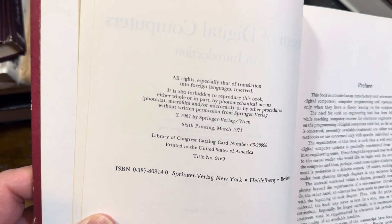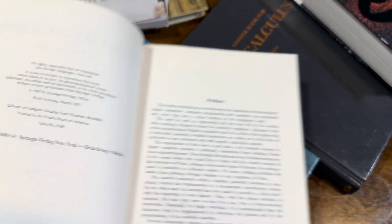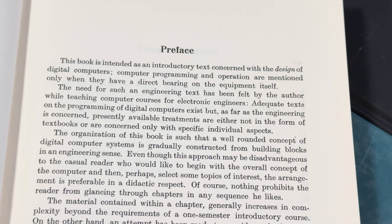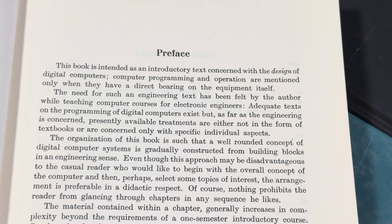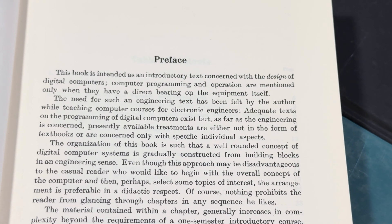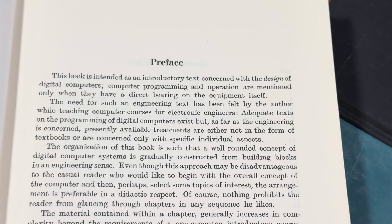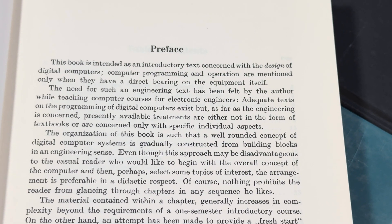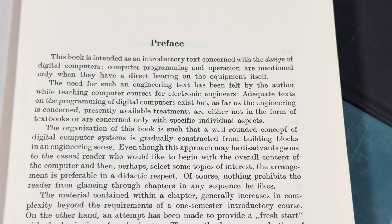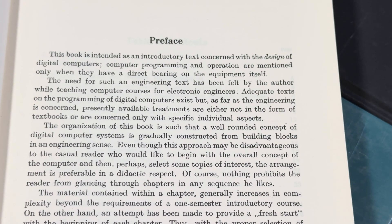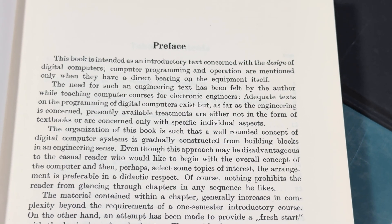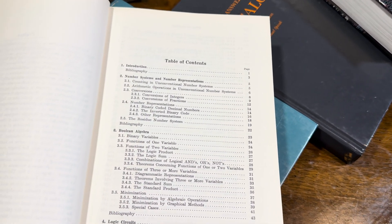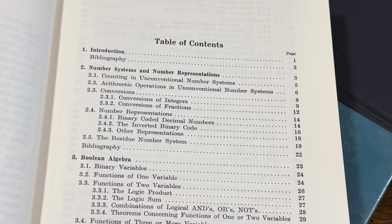Let's look at the copyright here. This appears to be the first edition. Let's take a look at the preface and see who this book is for. The topics are really cool. This book is intended as an introductory text concerned with the design of digital computers. Computer programming and operation are mentioned only when they have a direct bearing on the equipment itself. The need for such an engineering text was felt by the author while teaching computer courses for electronic engineers. Adequate texts on programming exist, but as far as the engineering is concerned, available treatments are either not in textbook form or concerned only with specific individual aspects. We're trying to fill a need that was not there — perhaps that's why it's in so many printings. It was a unique book in that sense.